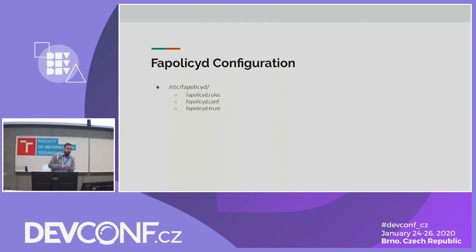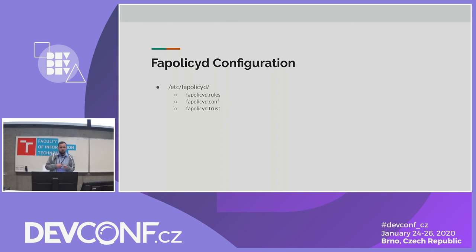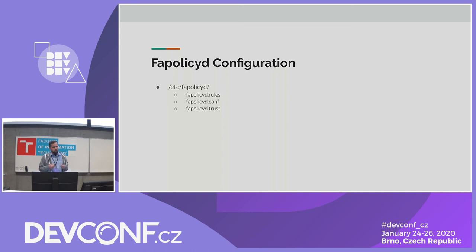FAPOLICYD can be configured in three ways. The first is the rules file, which holds the default set of rules. The second is the daemon configuration file, where you can tweak performance options. The third is editing the trust file, where you can specify the list of applications which you trust.